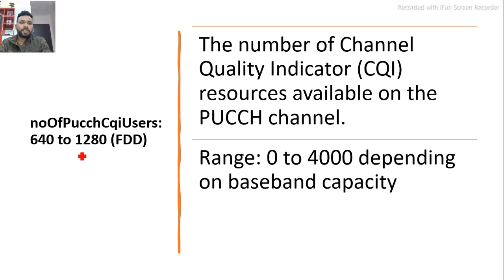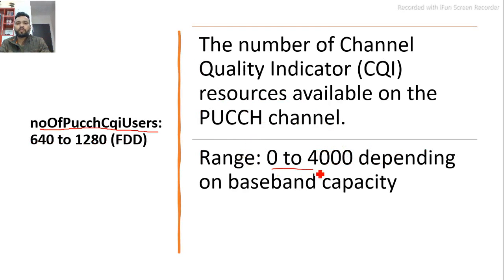Similarly, you can change the Number of PUCCH CQI Users. If access failures are high due to CQI users, you need to change this parameter. Its range is also 0 to 4000, again depending on baseband capacity. Check your baseband capacity and increase the number of CQI users accordingly.